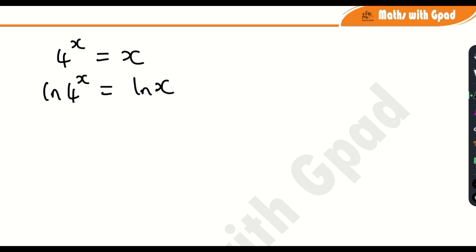From one of the laws of logarithm, this x will be used to multiply the natural logarithm. So I'm going to have x ln 4 is equal to ln x.